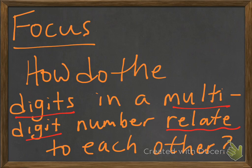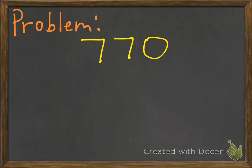So let's take a look at our first example. Our first problem here is this number, 770. And so what is the relationship between the value of the first 7 to the value of the second 7?